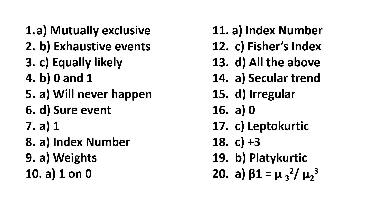Answers: Q1 — mutually exclusive. Q2 — Option B, exhaustive events. Q3 — Option C, equally likely. Q4 — Option B, zero and one. Q5 — Option A, will never happen. Q6 — Option D, sure event. Q7 — Option A, one. Q8 — Option A, index number. Q9 — Option A, weights. Q10 — Option A, one on zero.